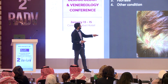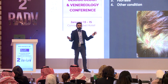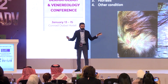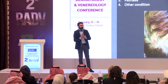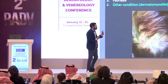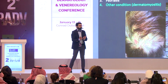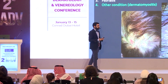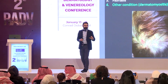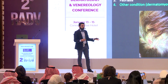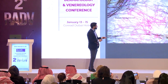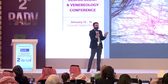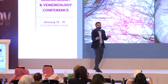Another case: tinea capitis, seborrheic dermatitis, psoriasis, or other disorder? We do not see yellow scales — we see white scales. We do not see dotted vessels typical of psoriasis. But this is not psoriasis — this is dermatomyositis. Dermatomyositis may show psoriasiform scaling of the scalp, very similar to psoriasis on dermoscopy. But the background is a little bit different — it's purple. In dermatomyositis it's purple; in psoriasis it's red.